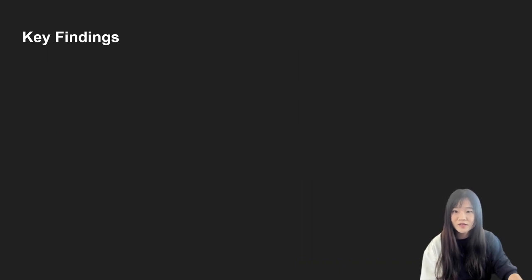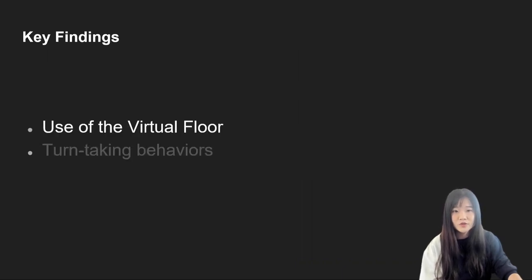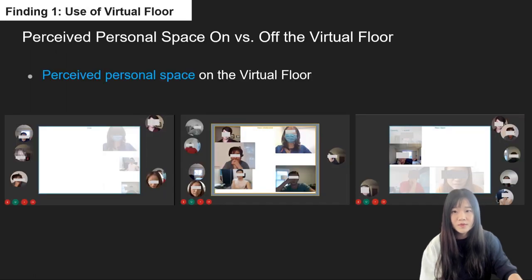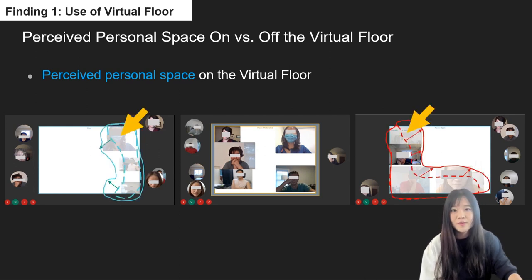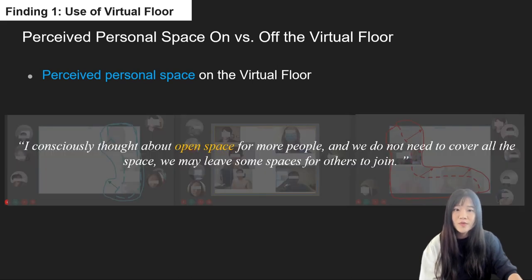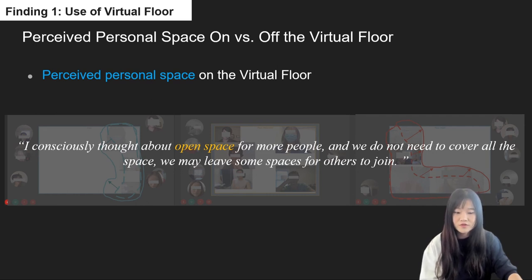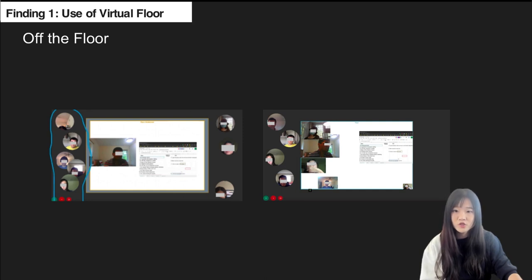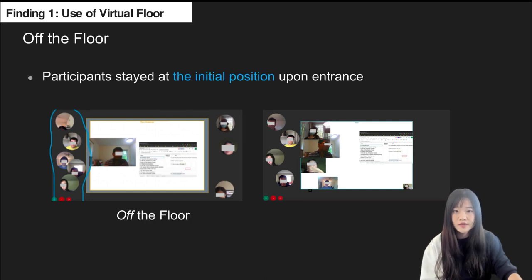Here I present several key findings. The first set of findings is about the use of the virtual floor. Participants were aware of their personal space when on the floor. As you can see from the figure, when a user is switching from off-floor to on-floor, their behavior is to move to the space first and reserve their video there temporarily without going further. During the focus group interview, users mentioned they considered the floor as an open space for more people, so they would leave space for others. In contrast, when off the virtual floor, participants tended to stay at the initial entrance position, and sometimes overlapped with each other without noticing.